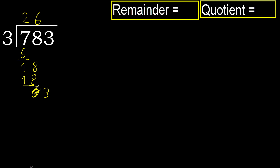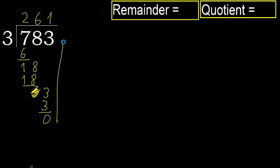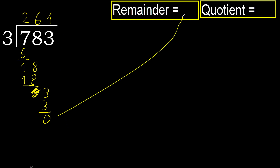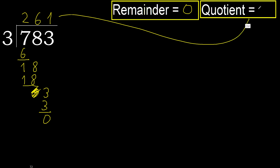Eliminate, 0. Bring down 3. 3 multiplied by 2 is 6, which is greater. Multiply by 1: 3, which is not greater. Subtract. Next. There is no number remaining, therefore finish it.